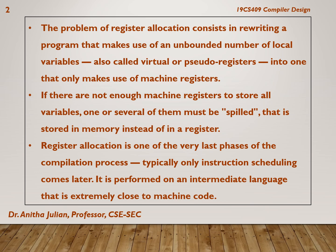Register allocation is one of the very last phases of the compilation process. Typically only instruction scheduling comes later. We will only be generating the instructions, and of course doing code optimization. This register allocation is performed on an intermediate language that is extremely close to machine code, which is nothing but our three address code.